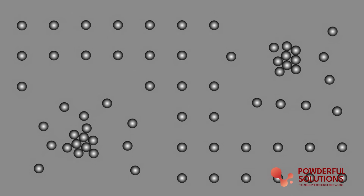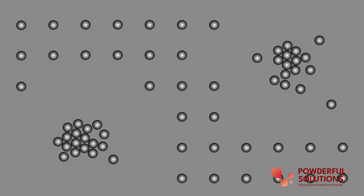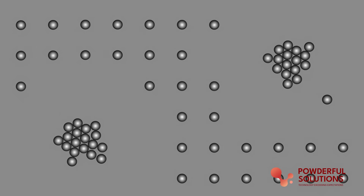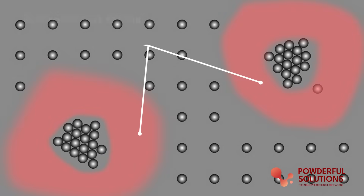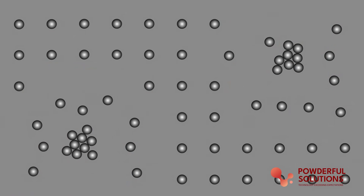This leads to inconsistent protection, with certain areas of the metal surfaces receiving little to no protection at all. But with stable dispersion, the particles are evenly distributed throughout the lubricant, allowing them to adhere to metal surfaces effectively.